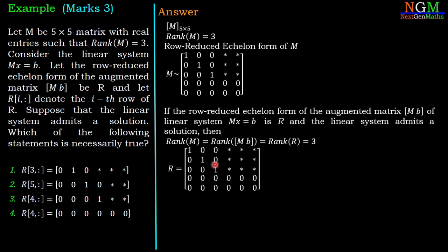...that means R, is in the form [1 0 0 * * *; 0 1 0 * * *; 0 0 1 * * *; 0 0 0 0 0 0; 0 0 0 0 0 0]. The last two rows must be zero because rank(R) is 3.